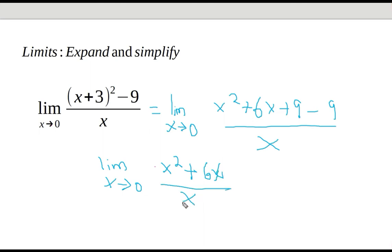Now I see here that I can still factor x out to simplify this a bit so that I can eliminate this denominator here. That's what was bothering us. So we have the limit as x approaches zero: x times (x plus 6), divided by x.